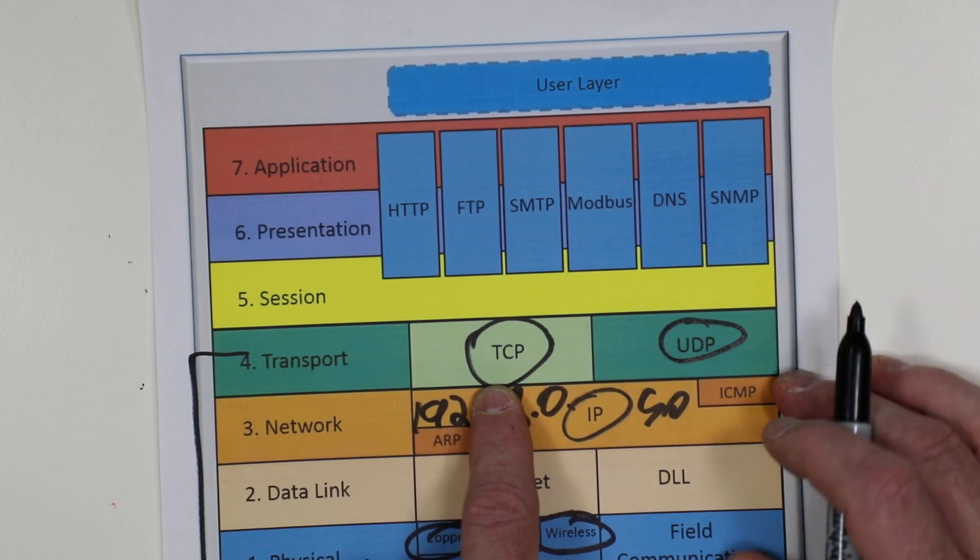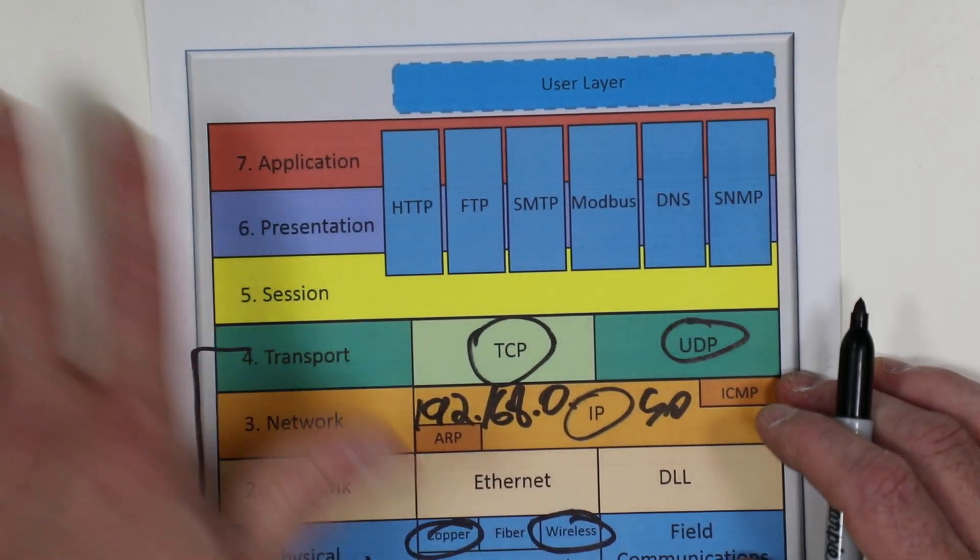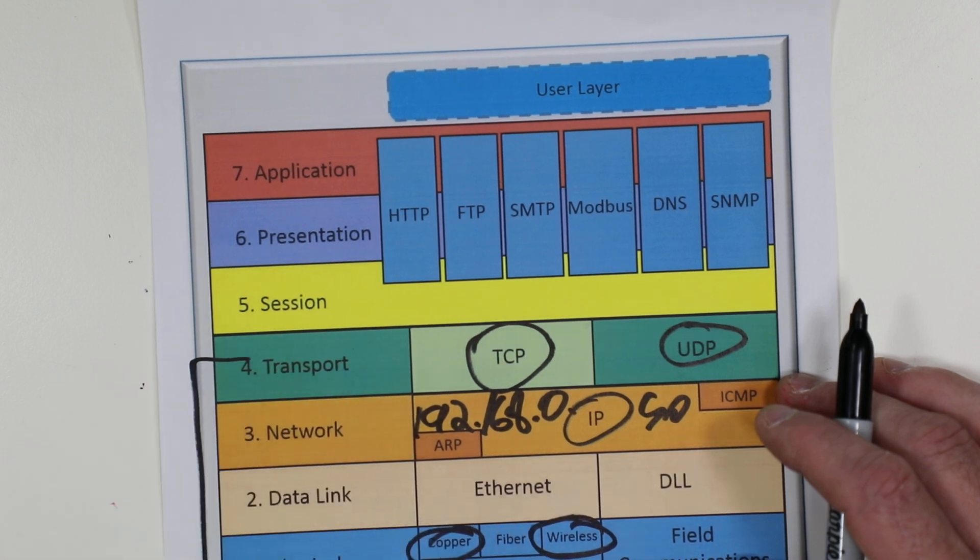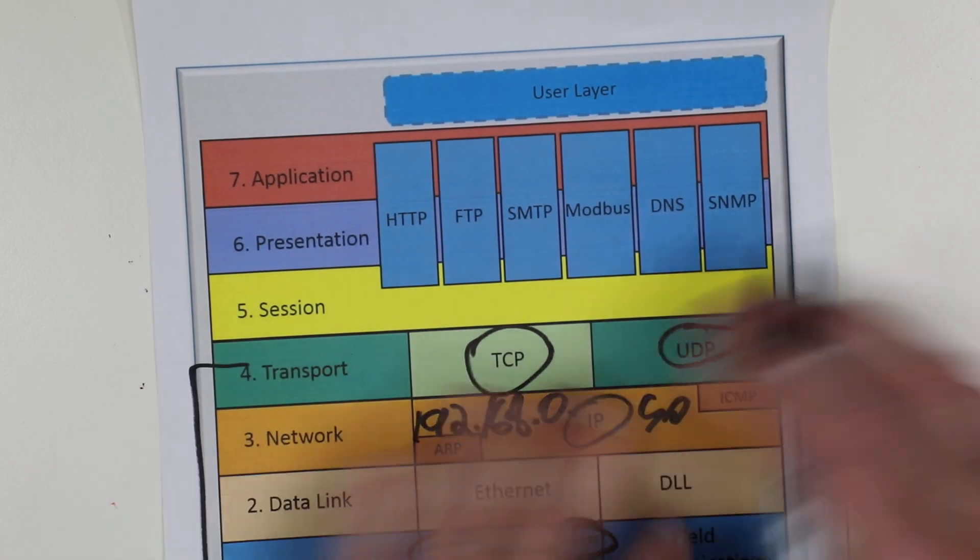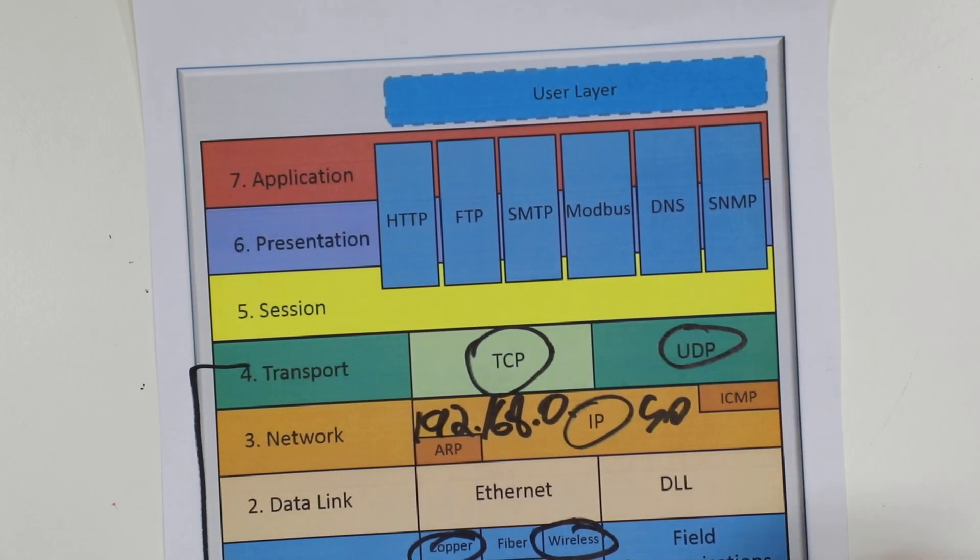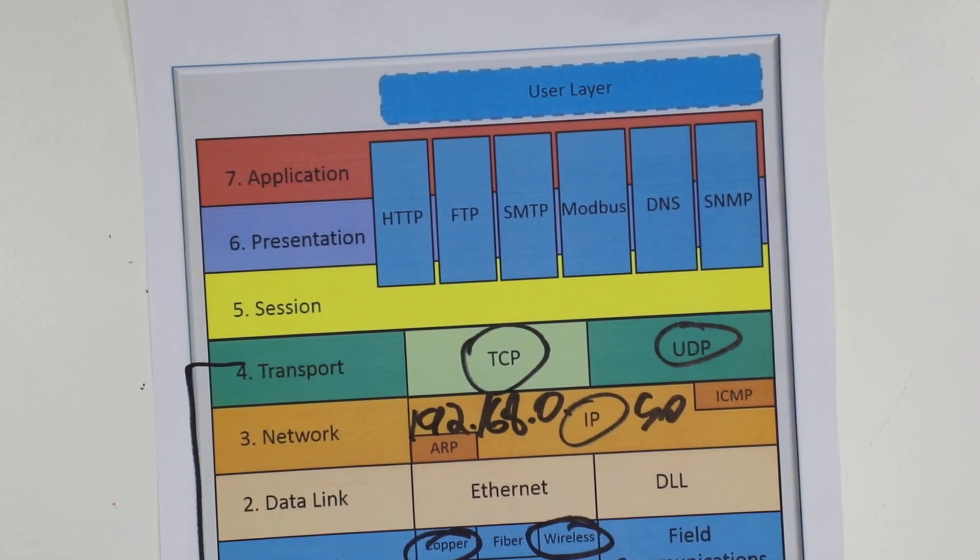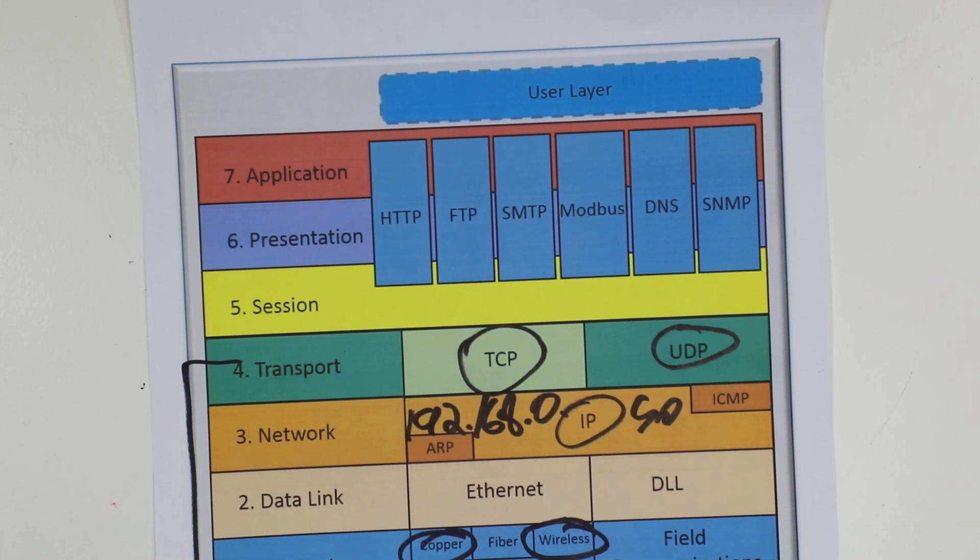Now, UDP is a protocol where the data just goes right out the network. There's no checking. It's fast. It's efficient. It's commonly used in, let's say, media distribution. So if you have video streaming and those kinds of things, UDP is typically used.